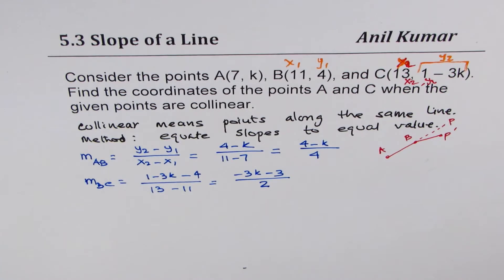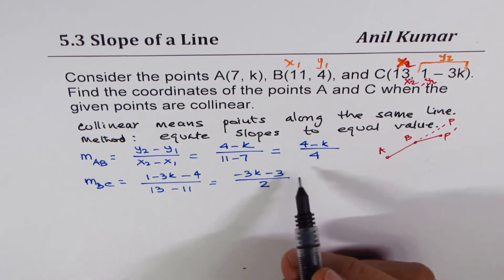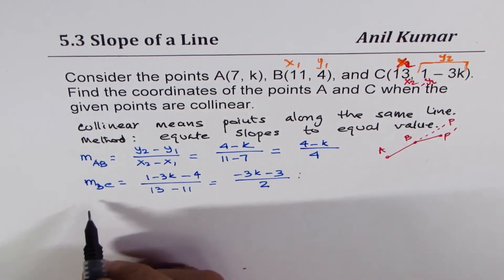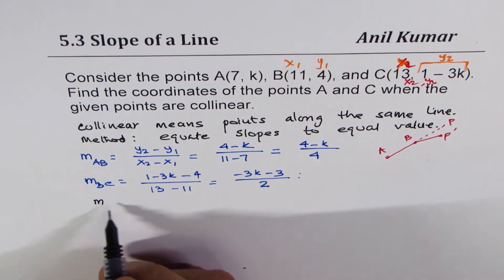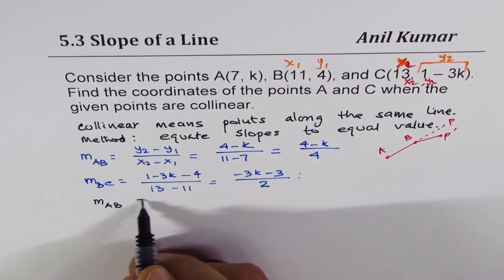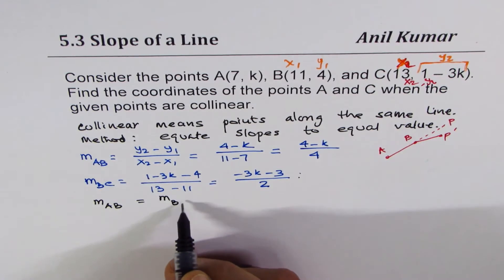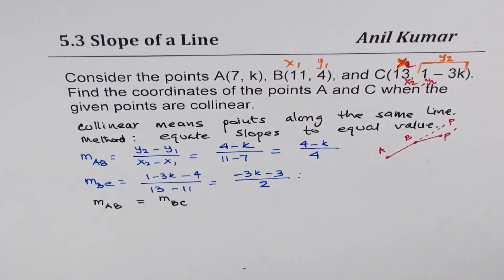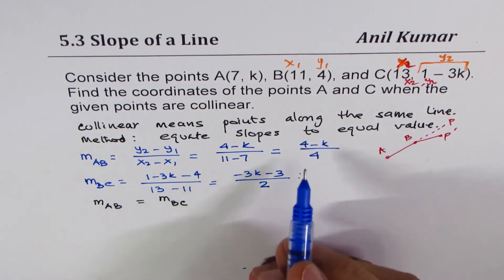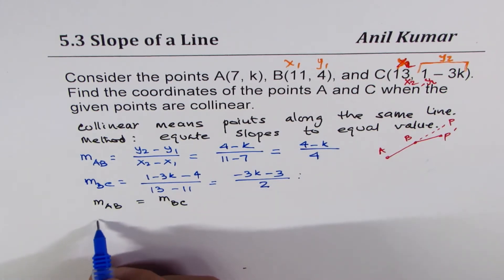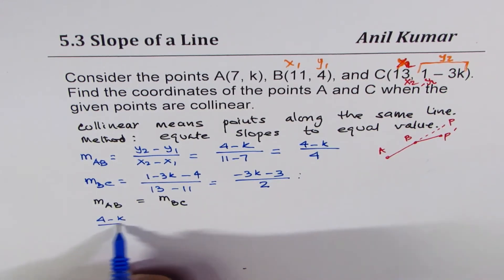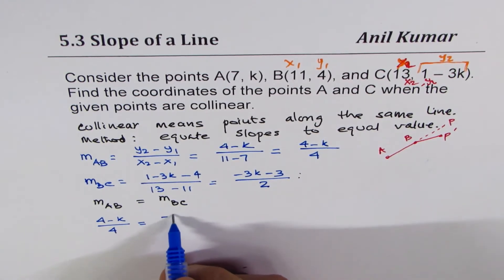Now, what we have to do is, since we know that both the slopes are same, so now we will equate the slope MAB as equal to slope BC. So that will give us two equations. So we have 4 minus K divided by 4 equals 2 minus 3K minus 3 divided by 2.